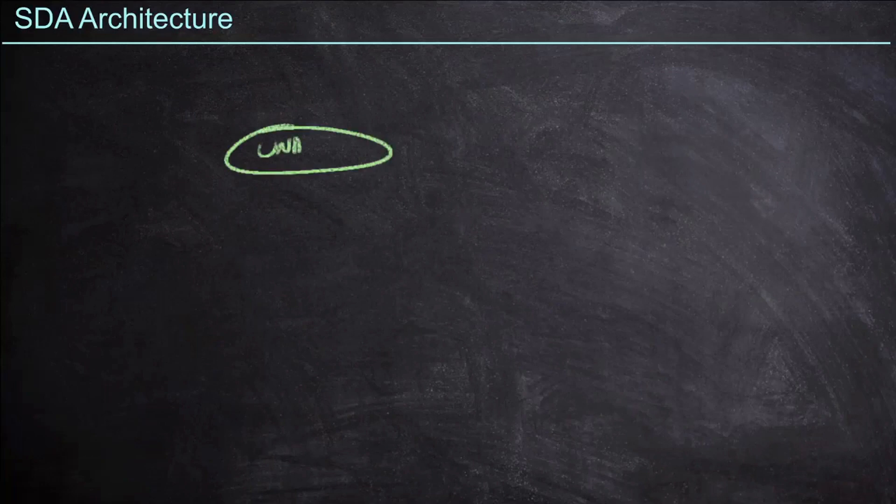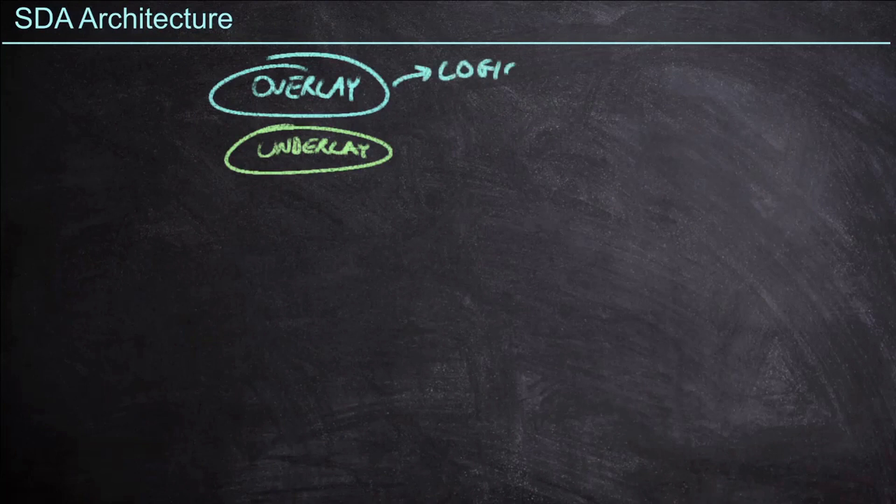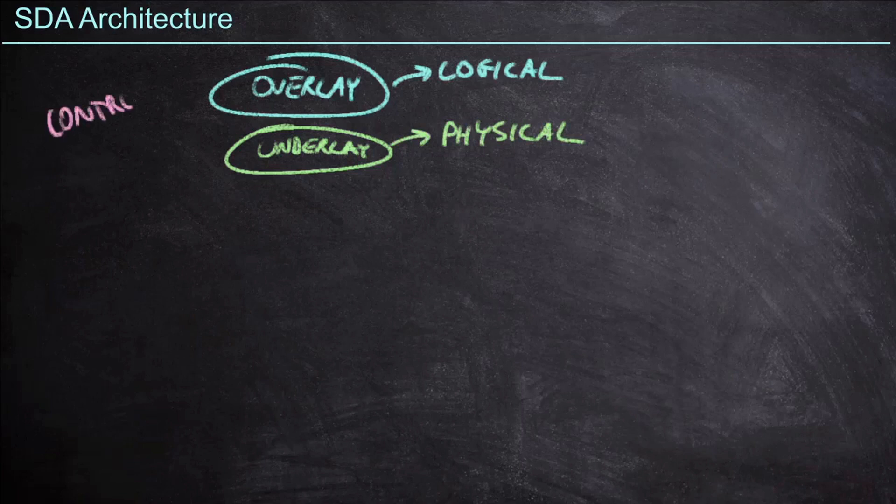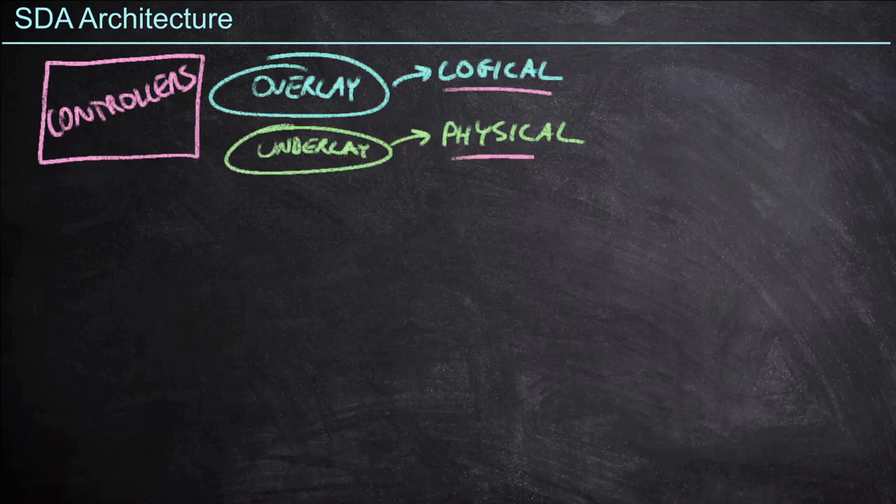Remember, we have this concept of the underlay and also an overlay. The overlay is the logical topology that we get to decide using those tunnels in order to create a software-defined fabric. However, the underlay is the physical equipment on which that logical topology is built. We also need to keep in mind that there are controllers at play, and these controllers are going to do the logical configuration for us on top of the physical equipment.